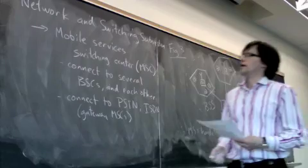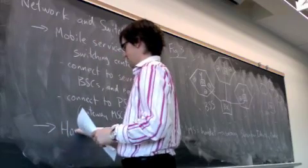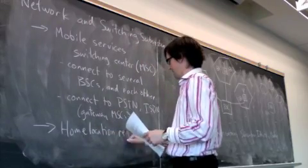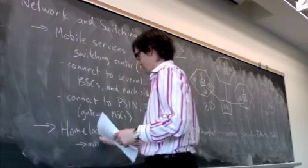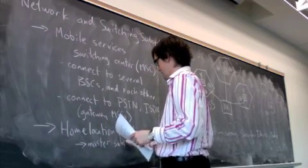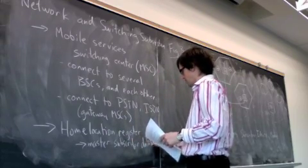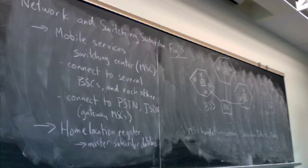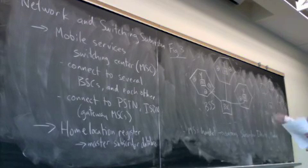Another component at this level is the home location register, and that's the master subscriber database. That basically contains information such as who you are, your SIM card, various technical details, but significantly it also records where you are in the network at any given time.